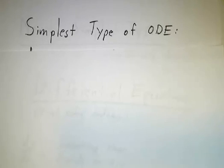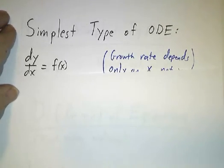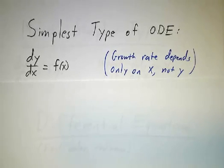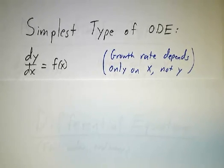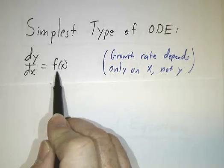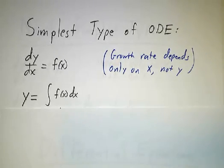Now, the very simplest kinds of ordinary differential equations, ODE stands for ordinary differential equation as opposed to a partial differential equation, is where the growth rate only depends on x and not on y. Now, the reason this is the simplest is because we just told you what the derivative of y is. If you know what the derivative of y is, how do you figure out what y is? Well, you just integrate. And we've just spent a month learning lots and lots of ways to integrate.